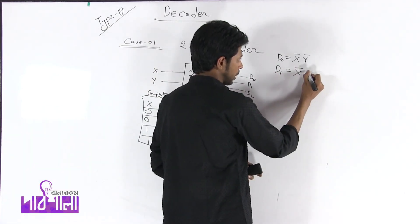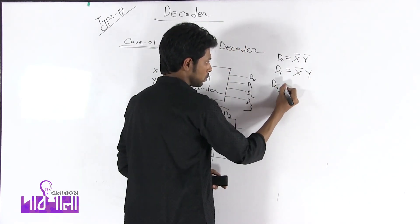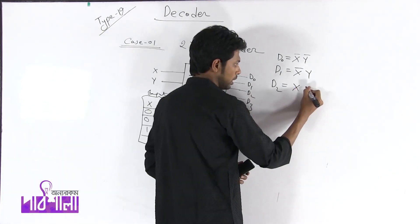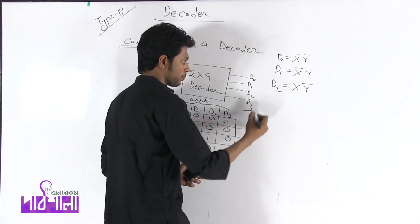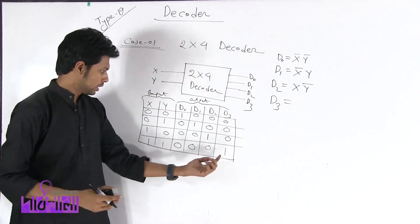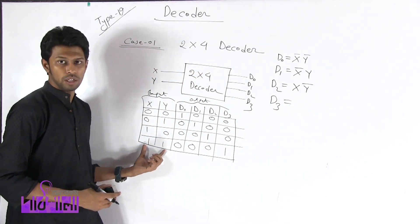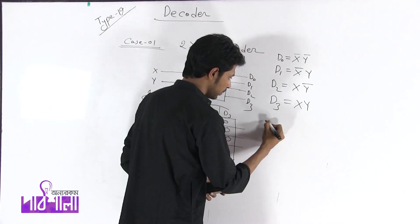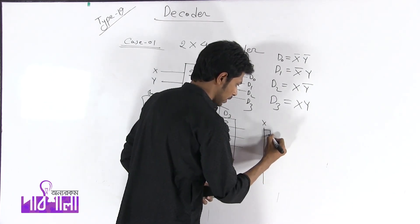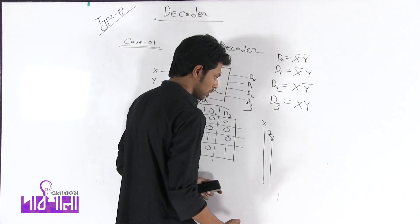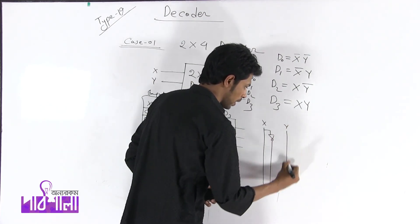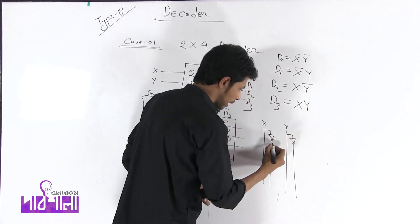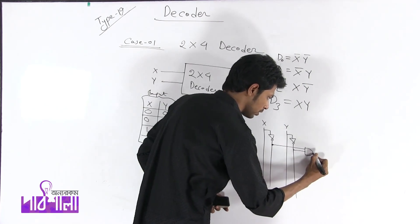Now D2 delivers the expression X=1, Y=0, which gives X·Y'. D3 has input X=1, Y=1, which is X·Y. So now we have the circuit connections. We can see that X is not equal to X-complement, it is not equal to Y, and it is not equal to Y-complement. But X'·Y' is equal to D0.